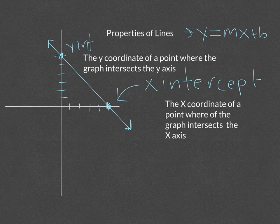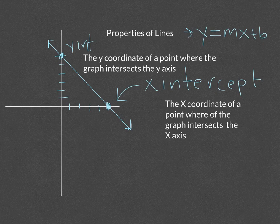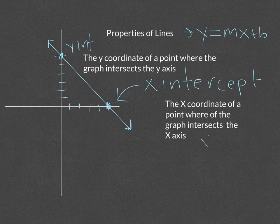You can write x and y-intercepts as either points or you could just say x equals your x-intercept and y equals your y-intercept.